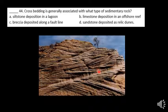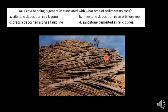Crossbedding is what we see here. This is generally associated with old dunes. As the winds shifted, we get the patterns in the sand — the energy levels and which way the winds were coming out of.